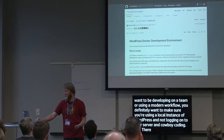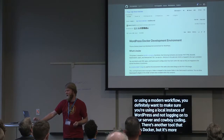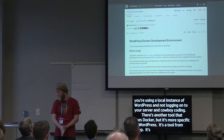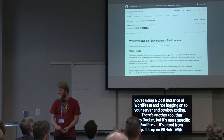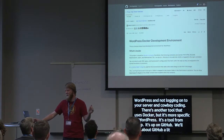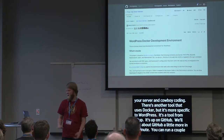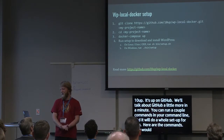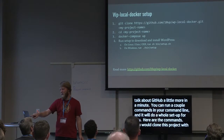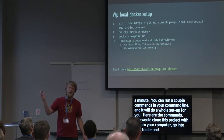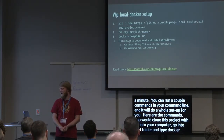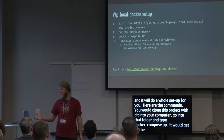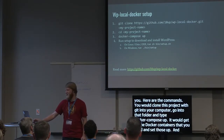There's another tool that uses Docker but is more specific to WordPress — it's a tool from 10up called WP Local Docker. You clone the project with Git, go into that folder, type 'docker-compose up,' and it will download all the Docker containers you need. Then you run one more command to install WordPress. It's pretty quick and easy, and I've been enjoying it so far.